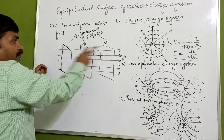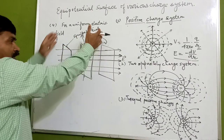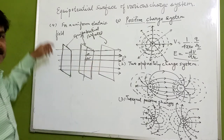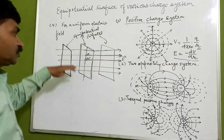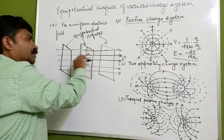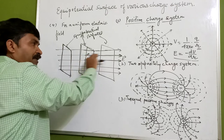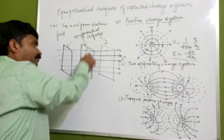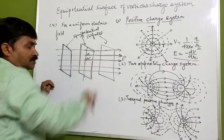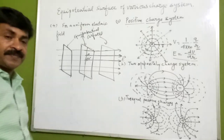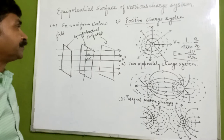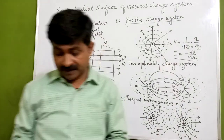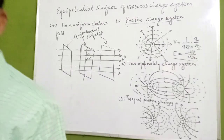They are parallel to each other, and the electric field direction is perpendicular — that is, normal — to the equipotential surfaces in all cases. The direction of the electric field is always normal to the equipotential surface.